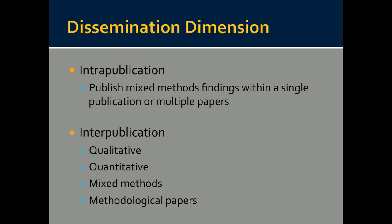The dissemination dimension is where you start getting the word out about what you've done. This can occur through two approaches: intra-publication and inter-publication. Intra-publication refers to how mixed methods researchers convey their findings through publication in a single paper — or multiple papers that all use mixed methods approaches together. Inter-publication involves publishing a qualitative paper, a quantitative paper, a mixed methods paper, and possibly a methodological paper — in any combination.